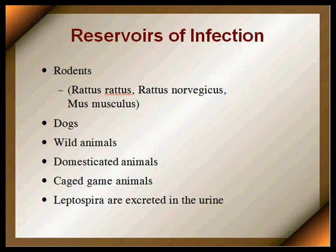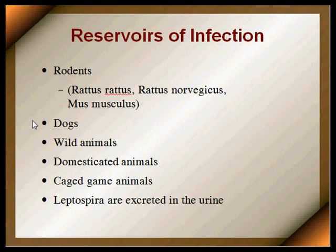The reservoirs of infection are primarily animals, which is why this is a zoonosis. These animals harbor the organisms in their bodies and excrete leptospirae in their urine. Notably, rodents are the most common reservoir — Rattus rattus, Rattus norvegicus, and Mus musculus. Dogs (both domestic and stray), wild animals, domesticated animals particularly cows and pigs, and caged game animals all harbor leptospirae in their kidneys. The renal tubules harbor these organisms, and leptospirae excreted in their urine contaminate the soil or directly contact human beings, producing human infection.